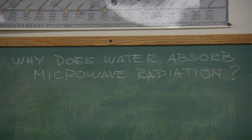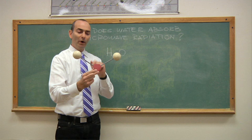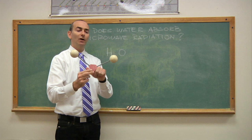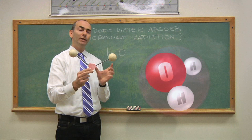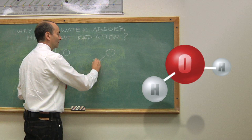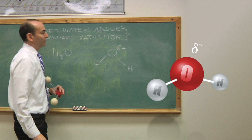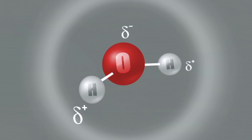Why does water absorb microwave radiation? To answer that question, we have to look at the water molecule. One special thing about the water molecule is that oxygen is a more electronegative atom than hydrogen, which means that the electrons that form these covalent bonds are not equally shared. They are pulled towards the side of the oxygen. That makes these covalent bonds polar covalent bonds, and they create a molecule in which the electrons are not evenly distributed. The oxygen, which has a higher electron density, carries a partial negative charge density, while the hydrogens are left with a partial positive charge density.